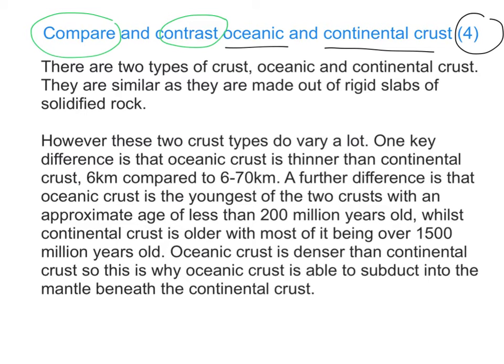I'm going to read through the answer and point out where the demands of the question have been met. 'Firstly, there are two types of crust: oceanic and continental crust. They are similar as they are made out of rigid slabs of solidified rock.' That first paragraph has completed the compare element of the question, and by using 'they are similar,' I have in the same sentence talked about both types of crust.